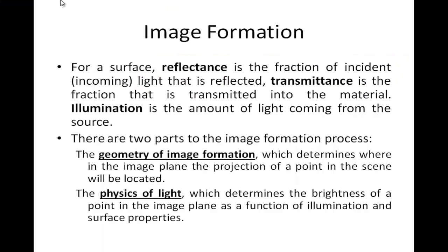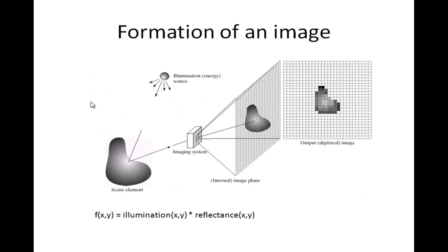Now, to be able to understand how images are formed, we need to understand three terms: reflectance, transmittance, and illumination. Illumination is the amount of light coming from the source — the source could be the sun for natural scenes, it could be a tube light, a bulb, or whatever we are using for illumination.